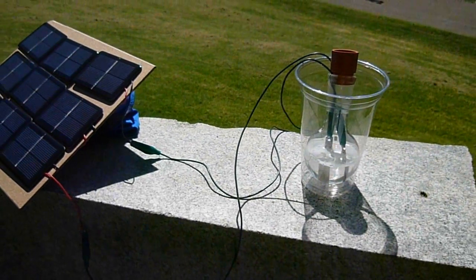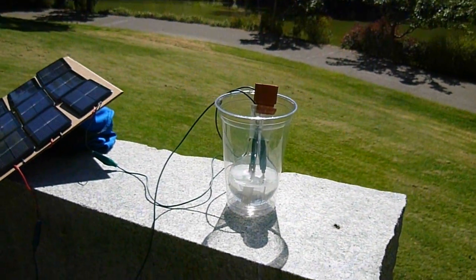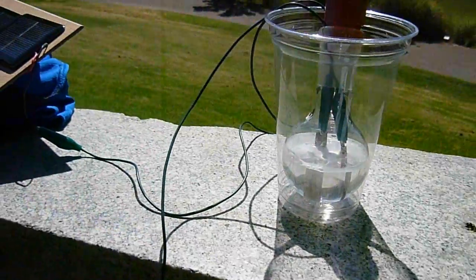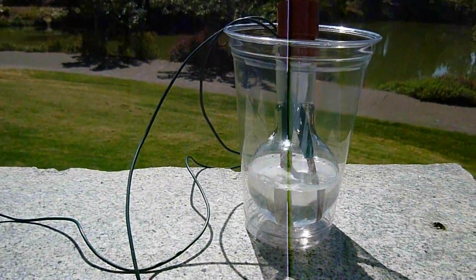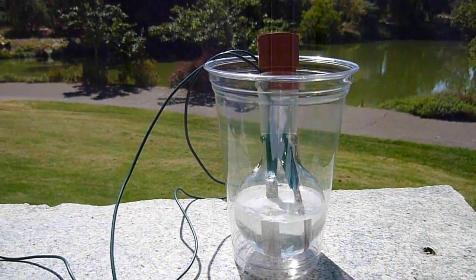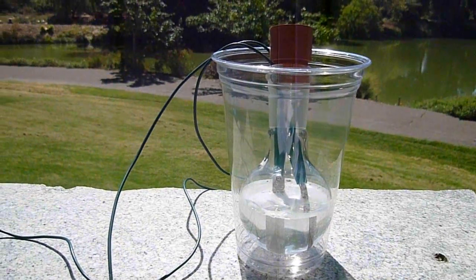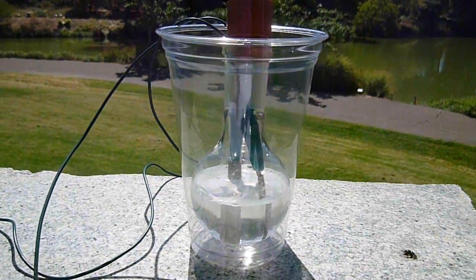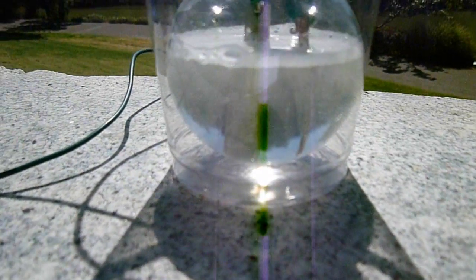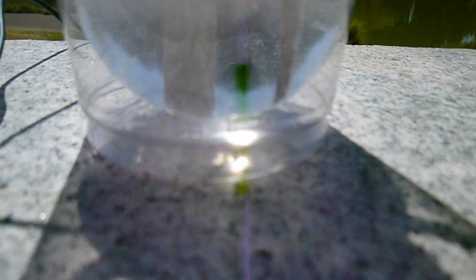As you can see, two nickel electrodes, one positive and one negative, are placed in a solution of pure water and sodium carbonate. When a direct current is applied, the separation of water into each of its components occurs, producing hydrogen and oxygen gas as a result.